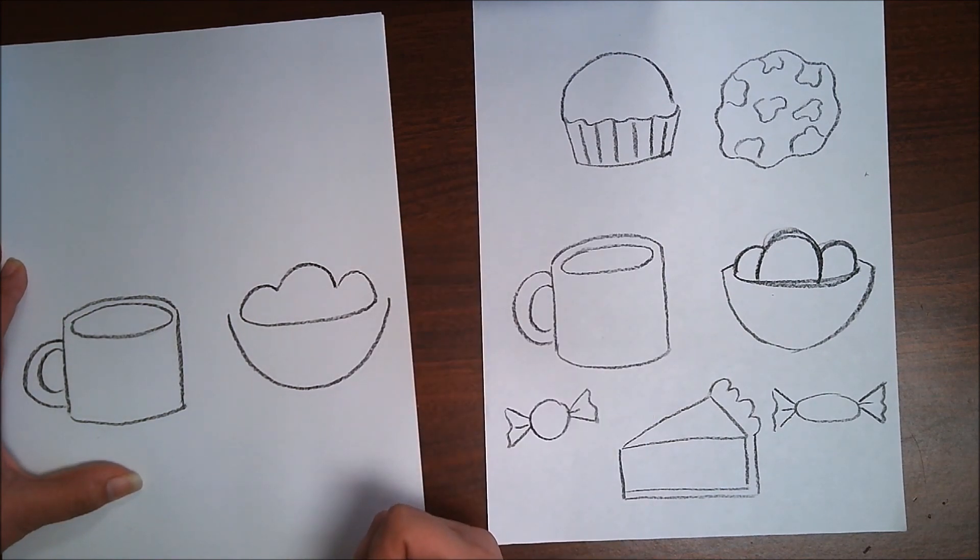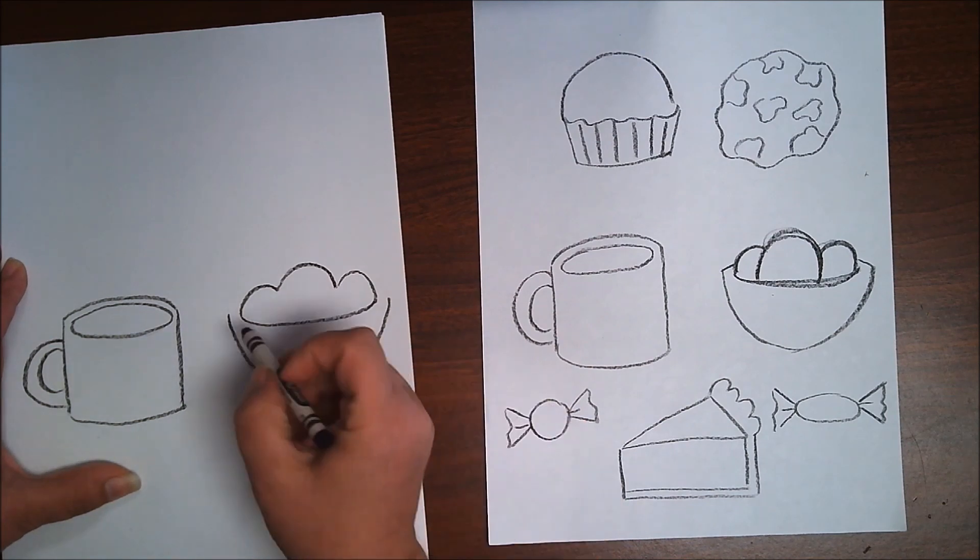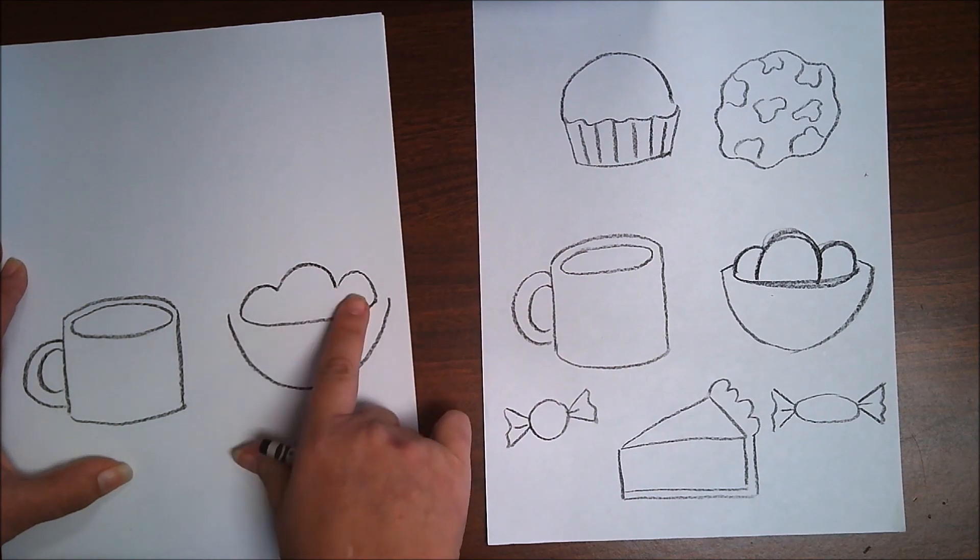So that could be almost anything. Say you don't like sweets and you want this to be a bowl of mashed potatoes, you're all set. And then what I want to do is instead of drawing this behind it, I've got this ice cream or pudding or mashed potatoes blocking it.